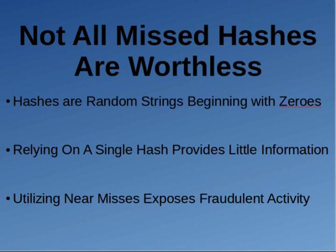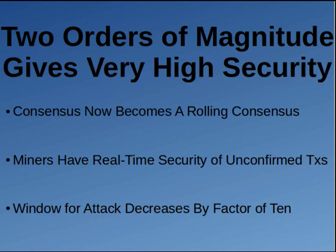The thought behind convergent consensus is: if those hashes are already being created and that information is already being produced by miners, why not use it? It also gives very high security in multiple ways. 'Two orders of magnitude gives very high security' means that if you're looking for 20 leading zeros, you include near misses with 19 or 18 leading zeros — this helps with statistical analysis. However, you don't want too many orders of magnitude because then you're wasting bandwidth, and that is actually the one known weakness of weak blocks.